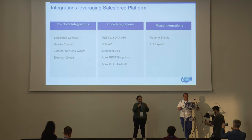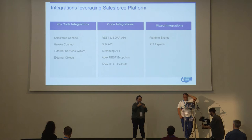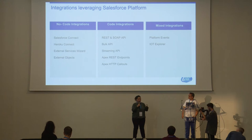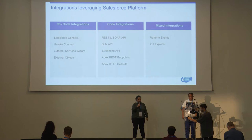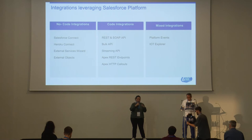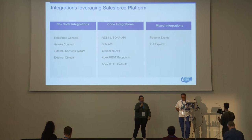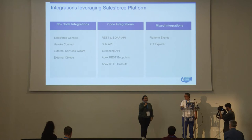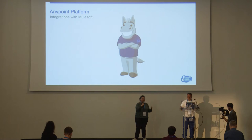If you need to go further and your integrations are a bit more complex, you can always write code using the REST and SOAP APIs, the Bulk APIs, the Streaming API, or Apex REST Endpoints or HTTP Callouts. Finally, there are mixed options where you need both a bit of code and some point-and-click, such as platform events and the IoT Explorer. Today we only have 20 minutes, so we won't go into detail on every single one. If you want to learn more, just go to Trailhead.